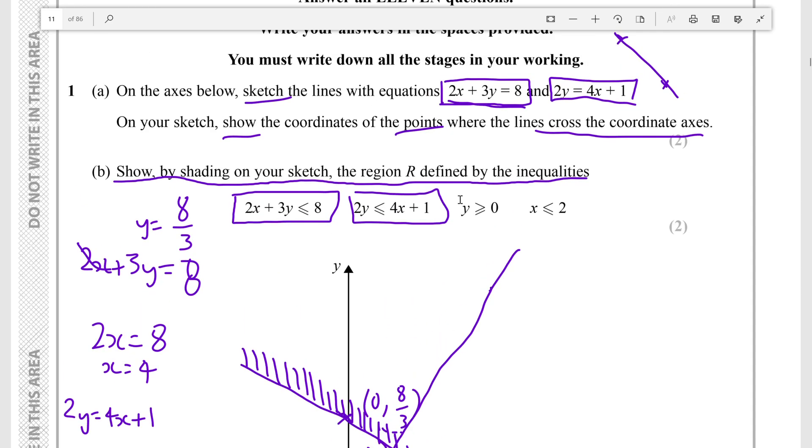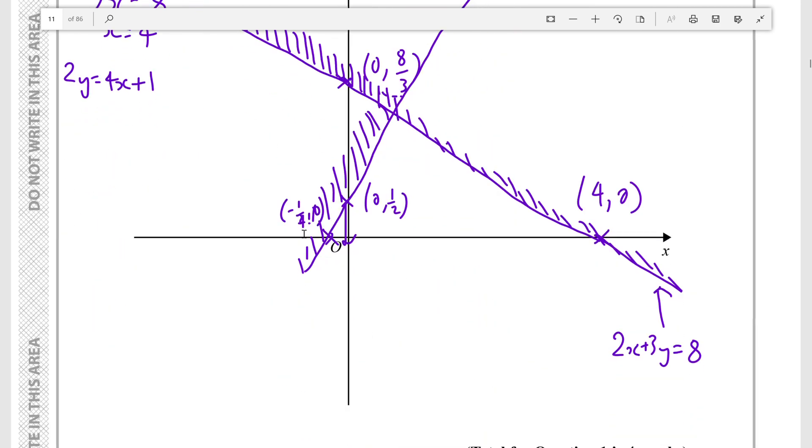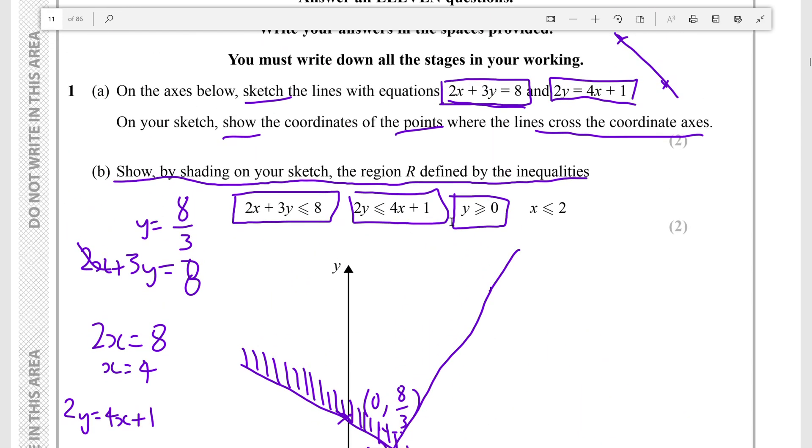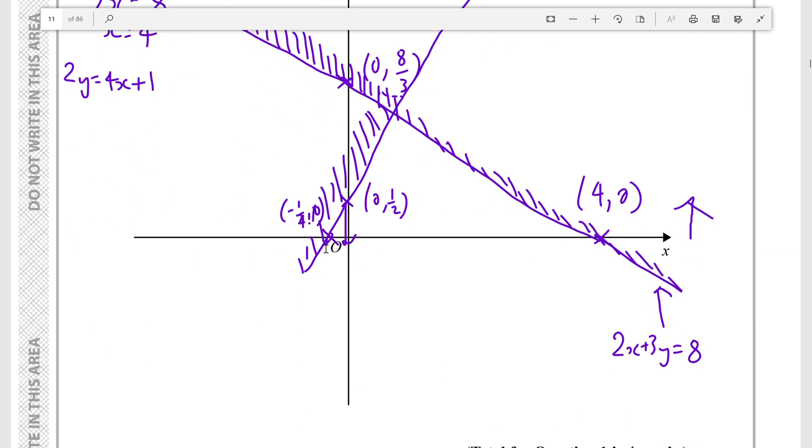So we know it's not on this side of the curve either. Now finally we have y is greater than or equal to 0, so if you take the line y equals 0 which is just the x-axis, it must be above it. So we know it is not here because y must be greater than or equal to 0. So let's shade this part.